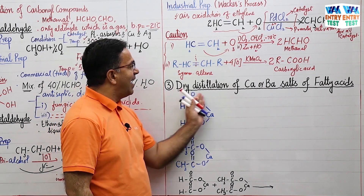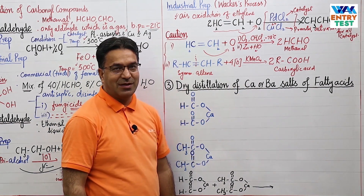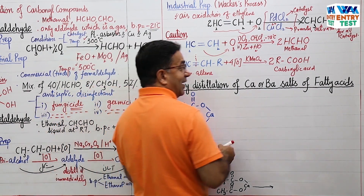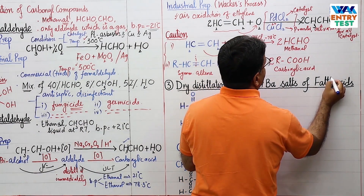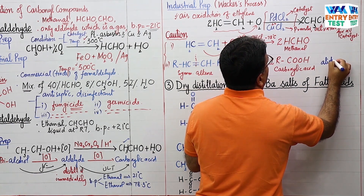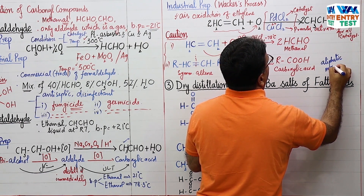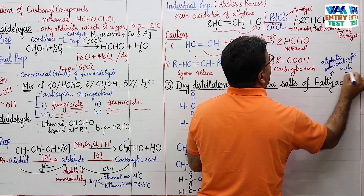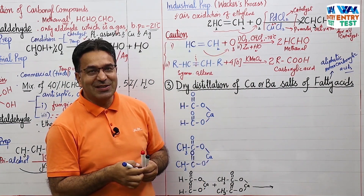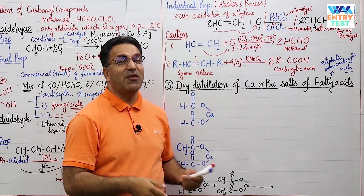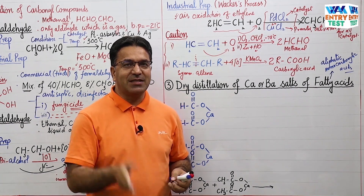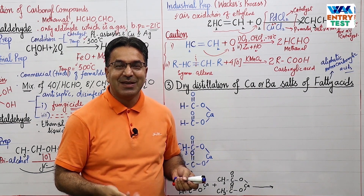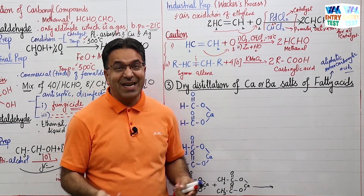Number 3: dry distillation of calcium and barium salts of fatty acids. What is a fatty acid? Fatty acids are monocarboxylic acids. Examples include propanoic acid, butyric acid, valeric acid, caproic acid, palmitic acid, oleic acid, and stearic acid — all of these are fatty acids.